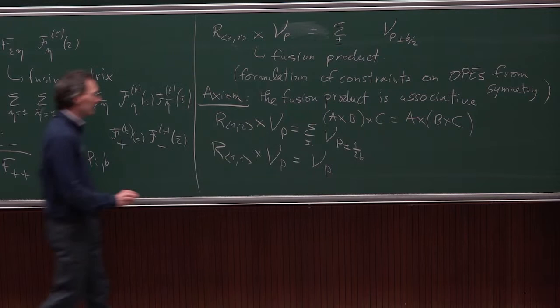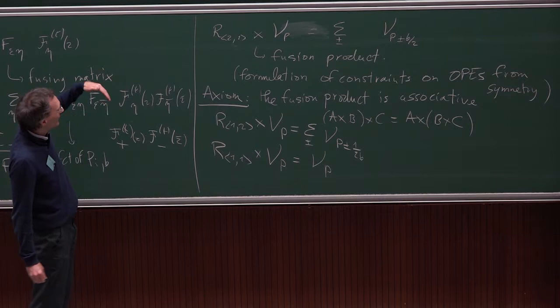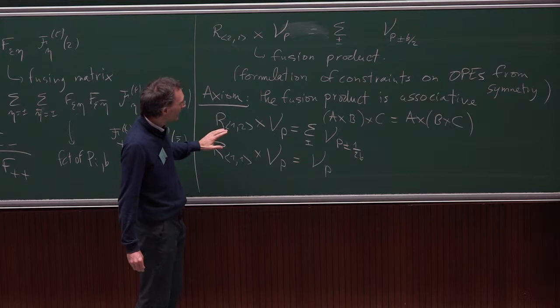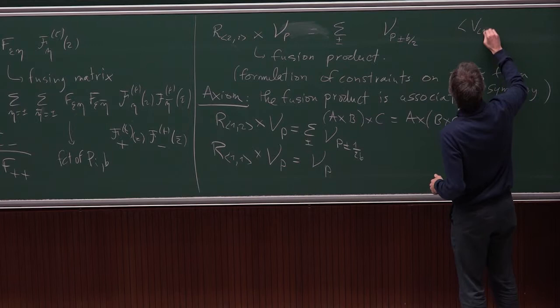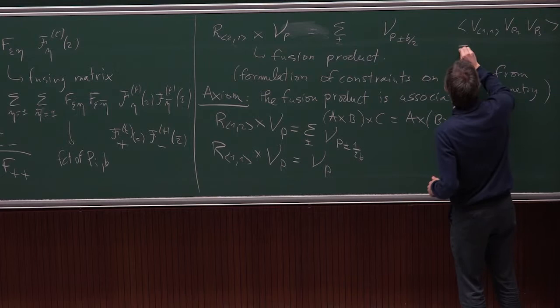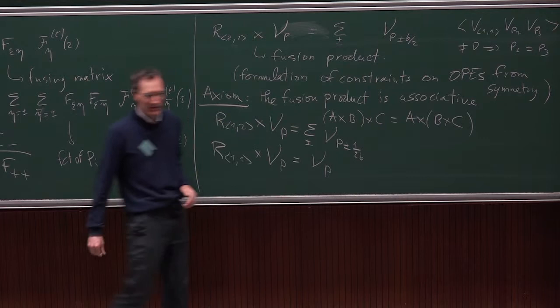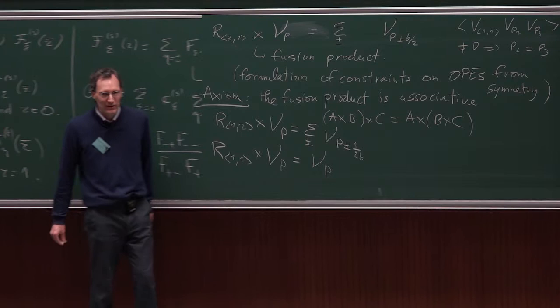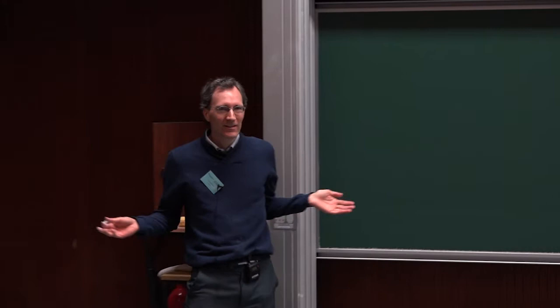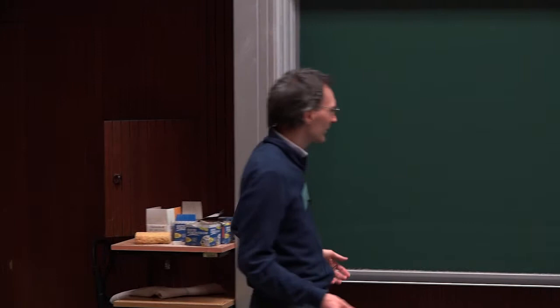It's possible to give an algebraic definition of the fusion product as a generalization of the tensor product, but we don't really need that definition. We also know: R₁₂ ×_F V_P = V_{P+1/2b} + V_{P−1/2b}, and R₁₁ ×_F V_P = V_P. This last fact is equivalent to what we saw in three-point functions: the three-point function ⟨V₁₁, V_{P₂}, V_{P₃}⟩ is non-zero only if P₂ = P₃.